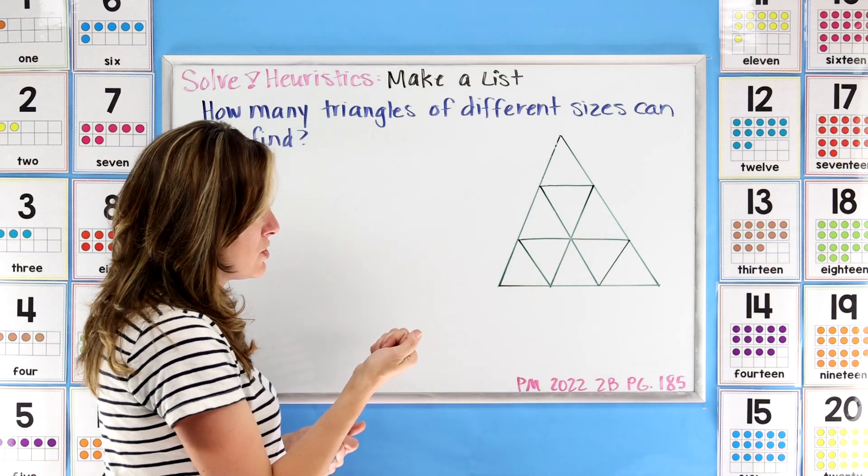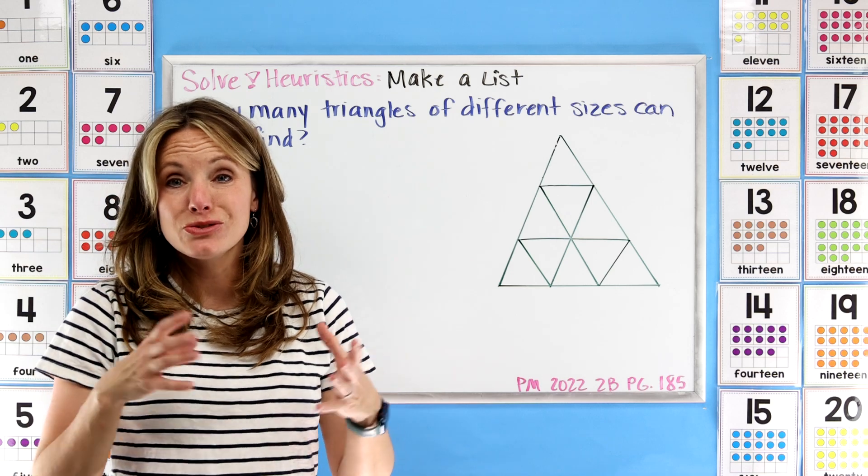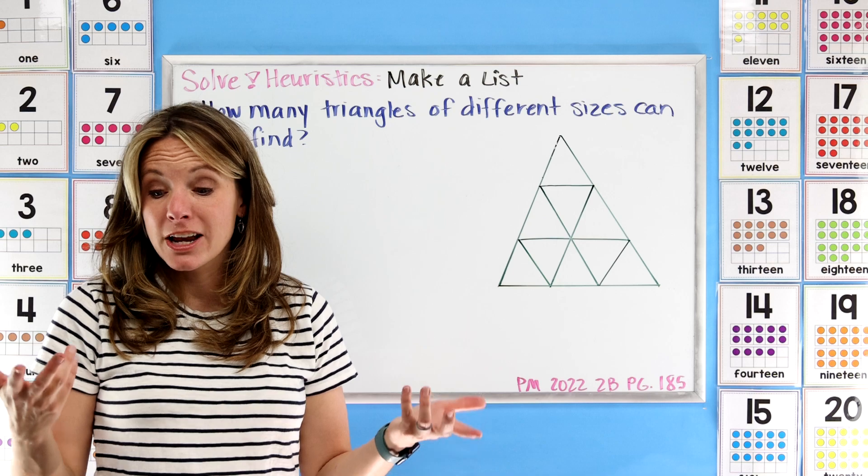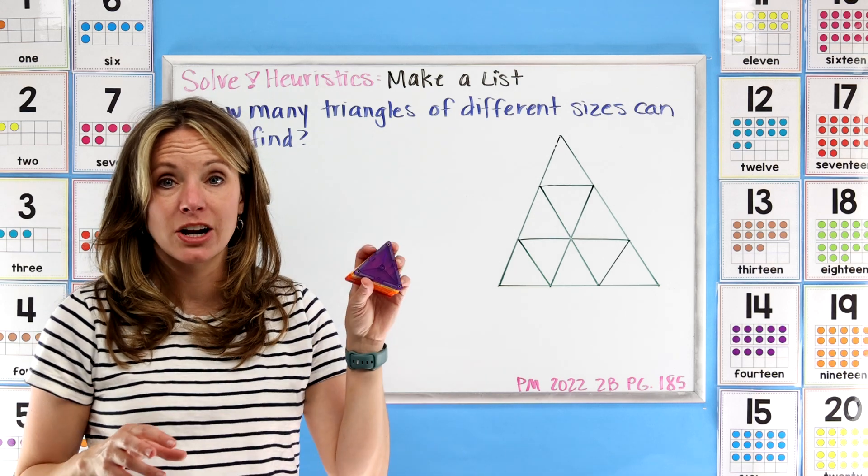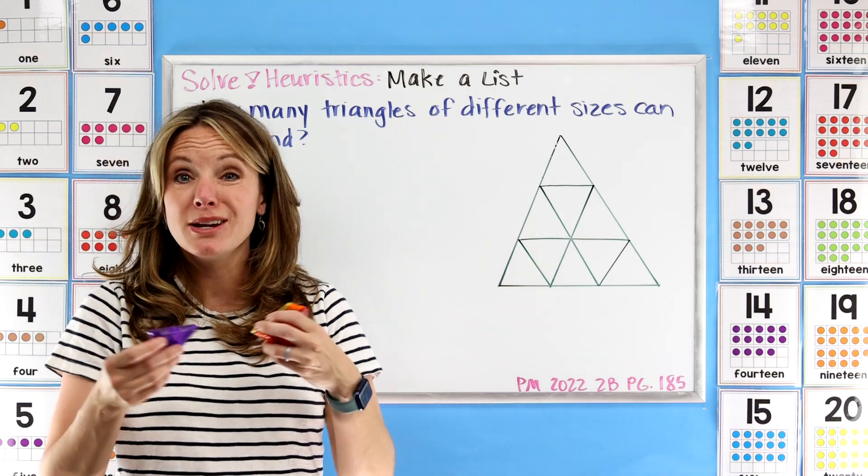Now you might be saying, I see these little ones here. I see those too. I see the big one. Do you see any other ways that you could find a triangle? That might be something to consider. You may even - I have my magnet tiles here - you may even want to build this so you can manipulate it and move it around. That's totally okay too.